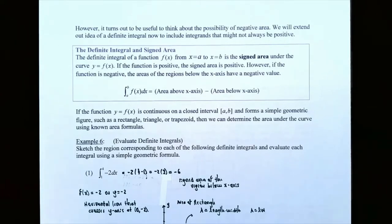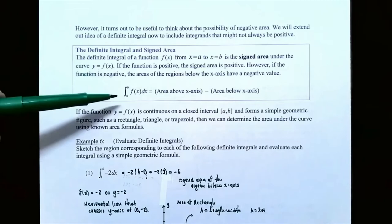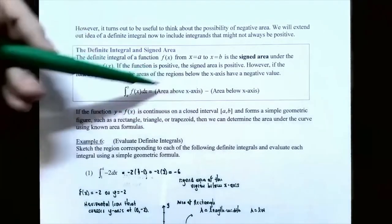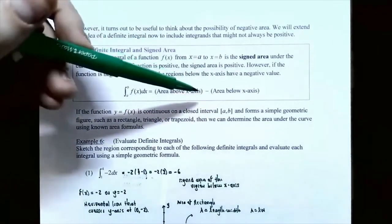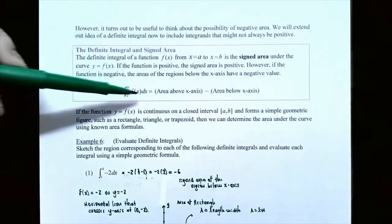The definite integral and signed area: the definite integral of f of x from x equals a to x equals b is the signed area under the curve y equals f of x. If the function is positive, the signed area is positive because the area is above the x-axis. If the function is negative, the area is below the x-axis and the definite integral equals the area above the x-axis minus the area below the x-axis.